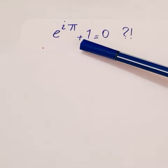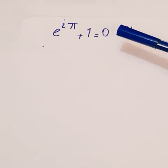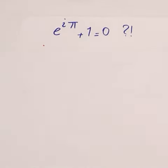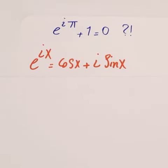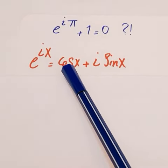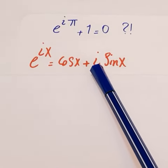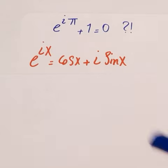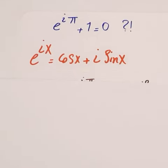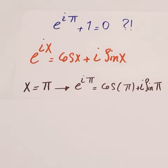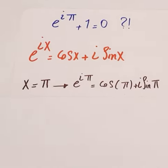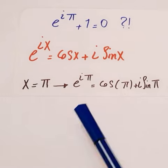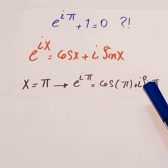Why is e to the i pi plus 1 equal to 0? According to Euler's formula, you can write e to the i x is equal to cosine x plus i times sine x. And if you put pi in this equation, you can write e to the i pi is equal to cosine pi plus i times sine pi.